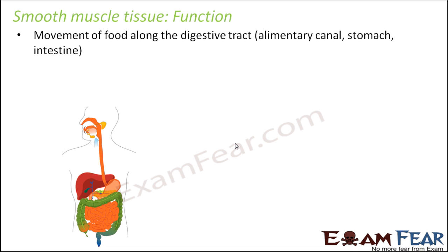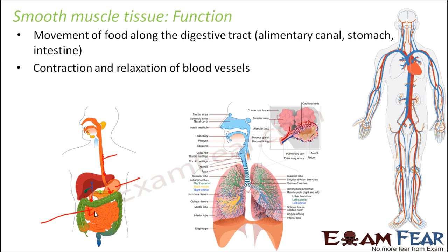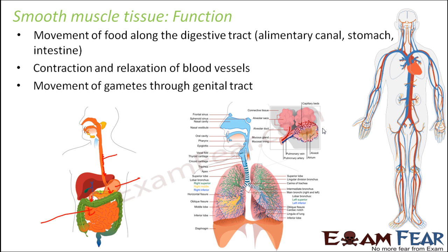In terms of function, smooth muscles help in the movement of food along the digestive tract — the food pipe, stomach, and intestine — where peristalsis propels food downward. They also help in contraction and relaxation of blood vessels; when we discussed the circulatory system, we saw that blood vessels contract and expand to control blood flow, and this is due to smooth muscle tissues inside the blood vessels. They also facilitate movement of gametes through the genital tract, which is their role in the reproductive tract.